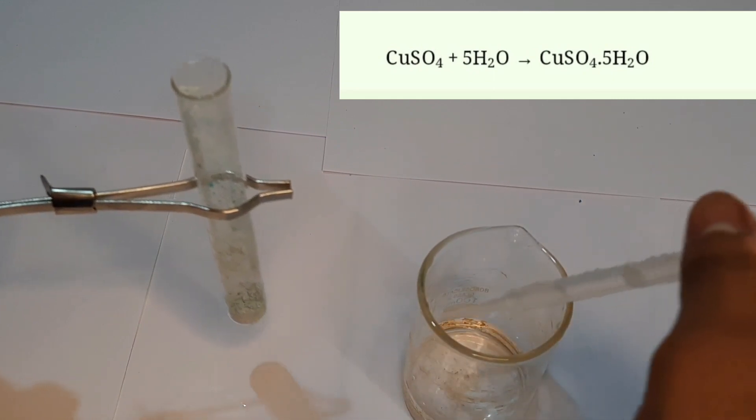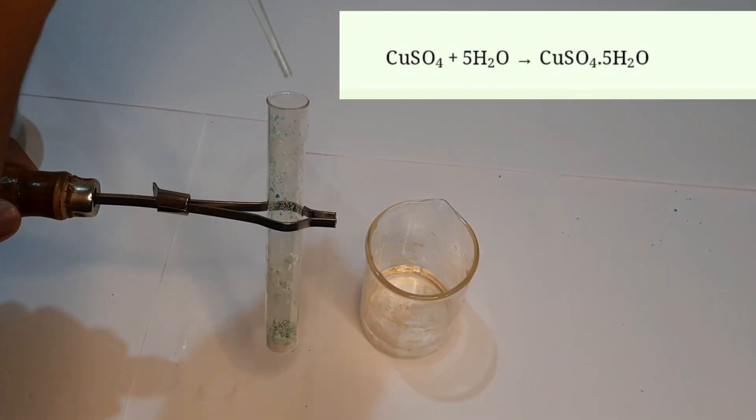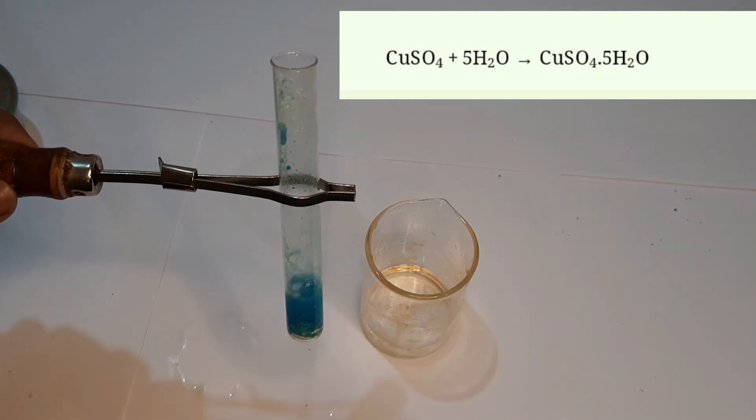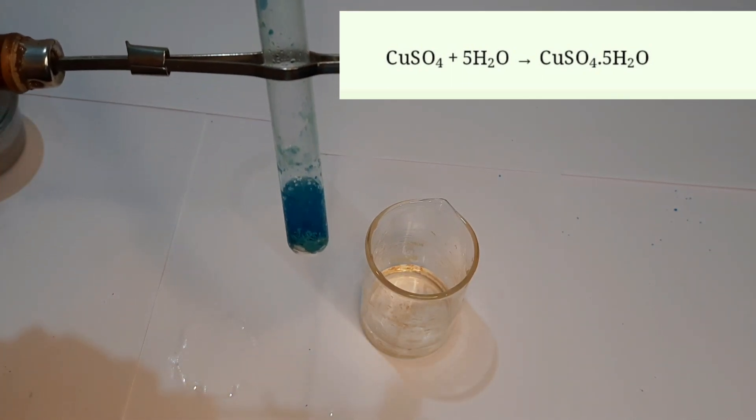The dehydration of copper sulfate crystals is a reversible process. When water is added to anhydrous copper sulfate, it gets hydrated and turns blue due to the formation of hydrated copper sulfate.